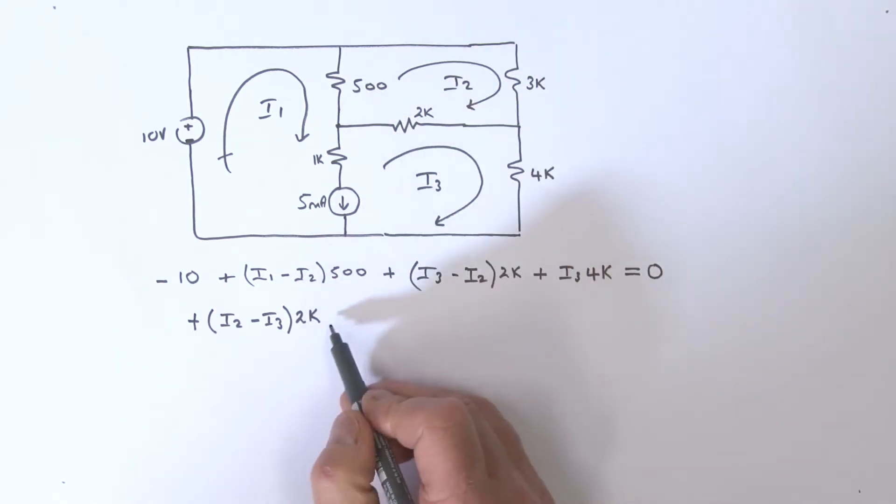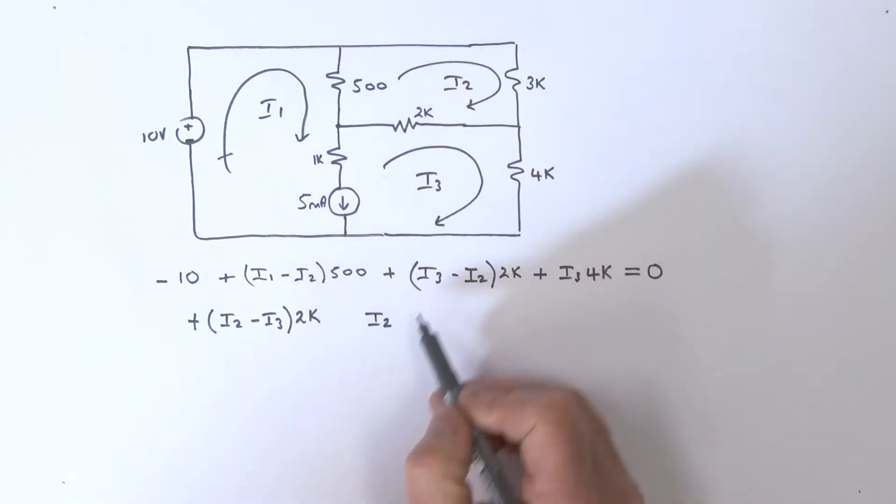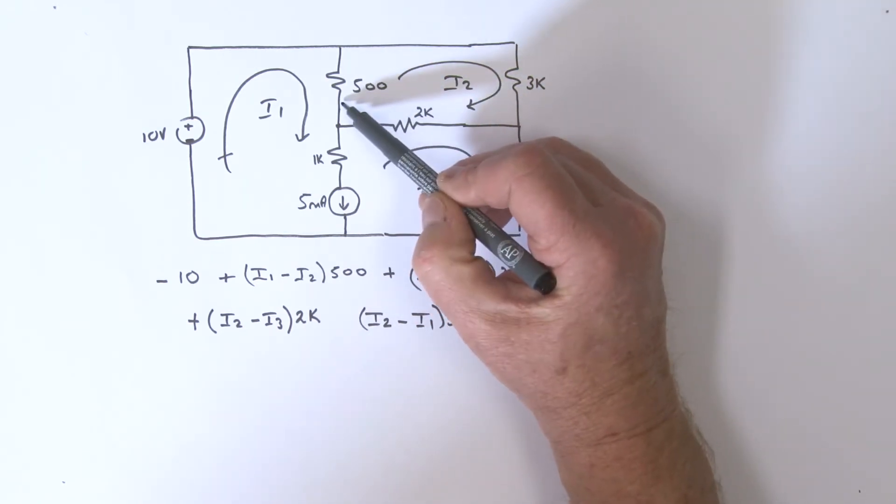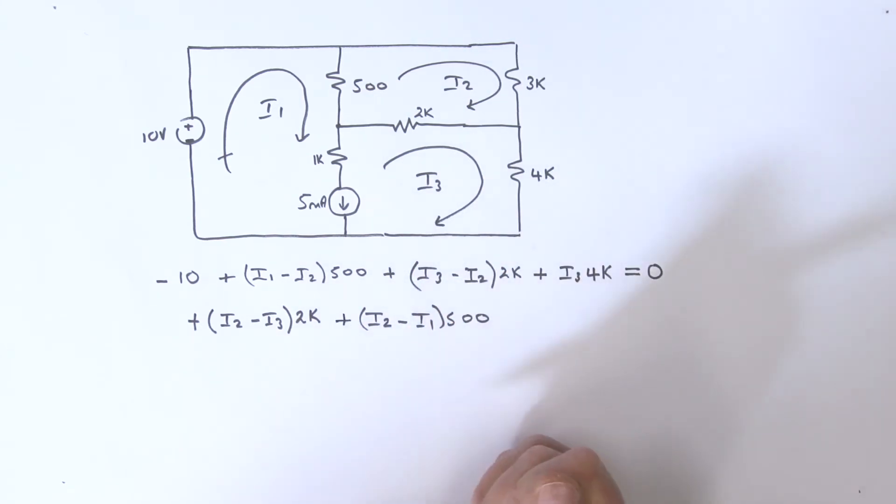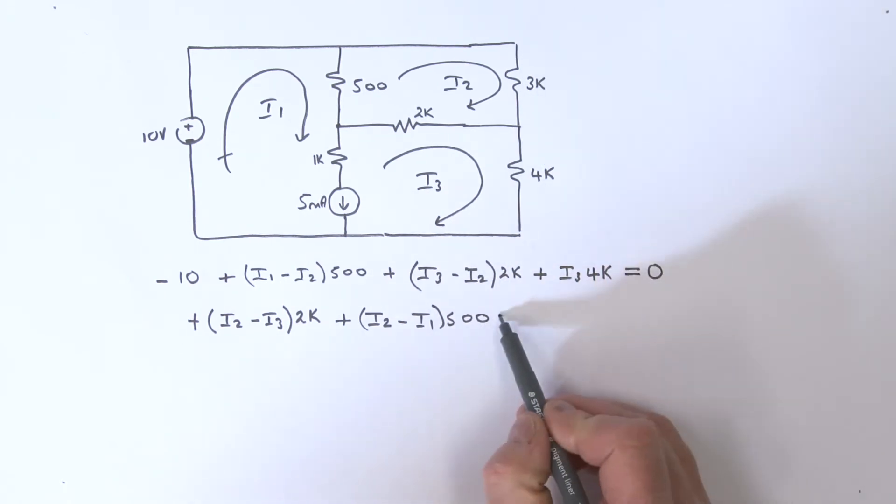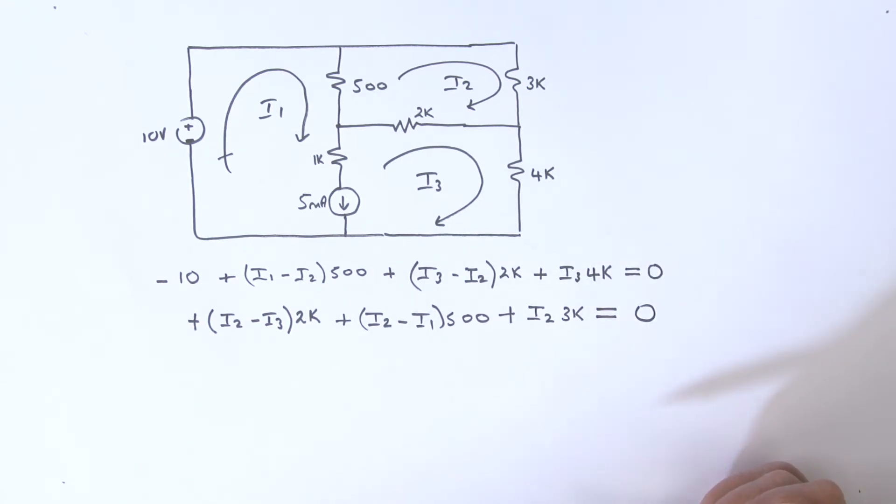Coming around once again, I've got i2 as the lead, so that's i2 minus i1, multiplied by 500 ohms. Since i2 is the lead, we're hitting that plus sign first. Then coming around, I've got the 3k resistor, so it's simply plus i2 times 3k. We're back to the beginning, and that equals zero.